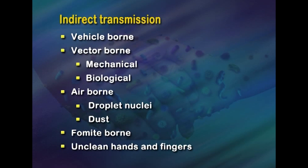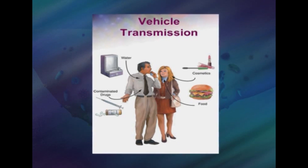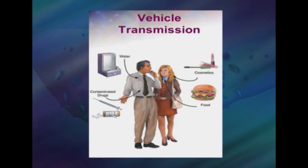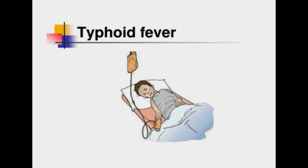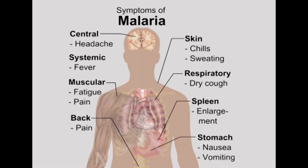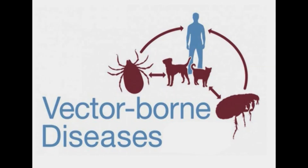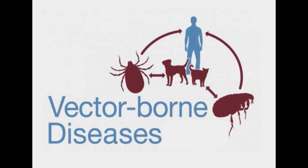Vehicle-borne transmission implies transmission of the agent through water, food, ice, blood, serum, and biological products; the most common are food and water. Some agents develop in the vehicle while others use it purely as a vehicle. This is seen in typhoid fever, diarrhea, cholera, polio, and malaria. A vector is defined as an arthropod or any living carrier that transports an infectious agent to a susceptible individual.